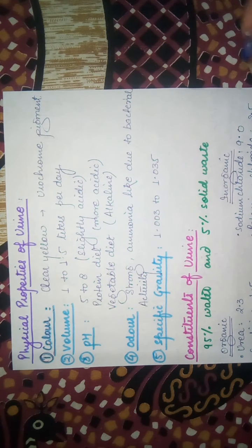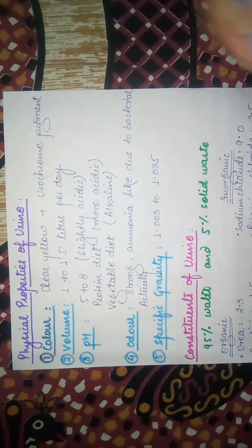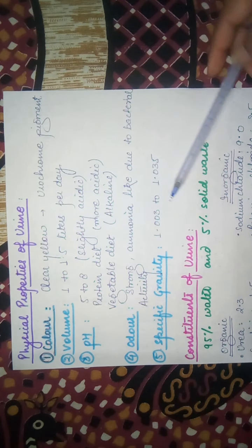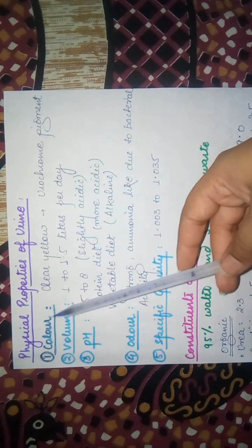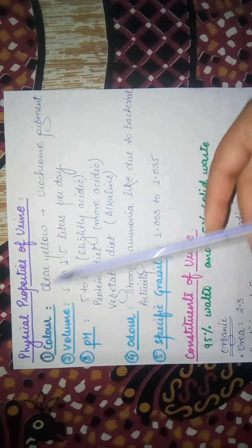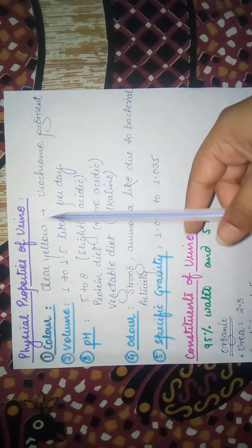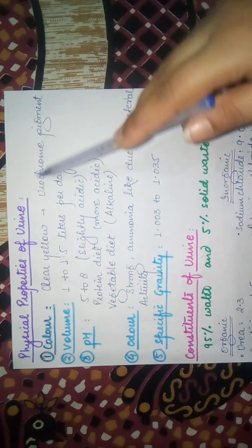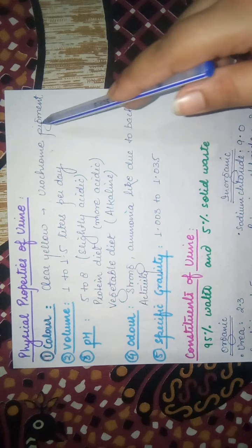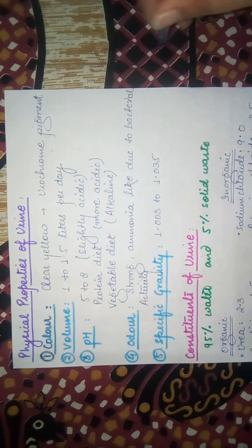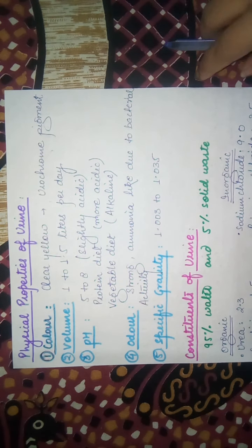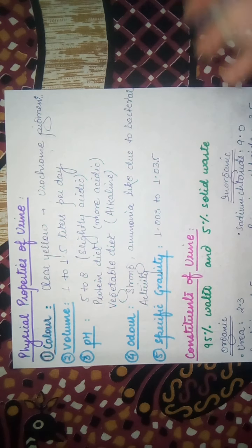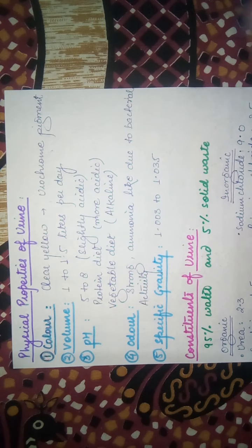The components of the urine are considered as constituents. First, we will talk about the physical properties. The first property is the color. The color is very clear and yellow. This yellow color is because of a chromogenic pigment called urochrome. Urochrome is made of bile pigment. The bilirubin and biliviridian components are released from the urinary tract.